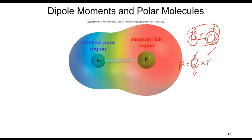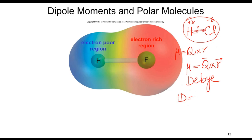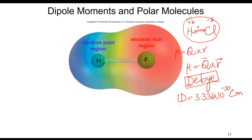So Q is the charge and R is the distance between the atoms. The unit of dipole moment is Debye (D). One Debye is equal to 3.336 × 10⁻³⁰ coulomb meter. You must remember that the unit of dipole moment is Debye, named after Peter Debye who discovered this.